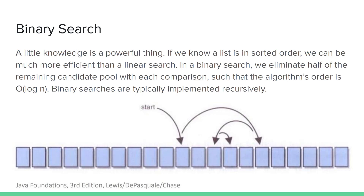Binary search begins by examining the middle element of the range. If the target element is greater than the middle element, as in this example, we know that the target can only be found to the right of the first candidate element — we never have to look to the left. The search is then repeated, often recursively, on the range of elements to the right. After each comparison, the candidate range is narrowed by half until the target is found or the range is reduced to zero. The advantage of binary search is that it's extremely fast, but it only works on an already sorted collection.